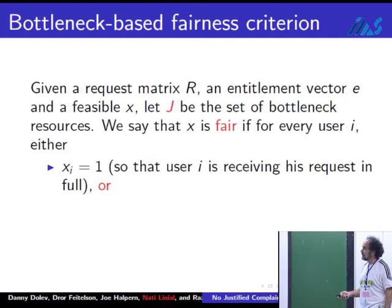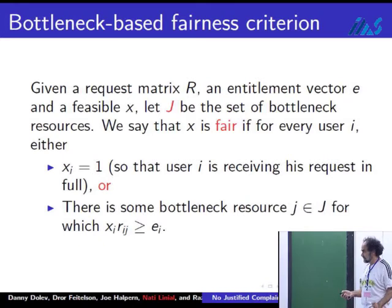What we want is to make sure that we somehow satisfy each user, that no user has any grounds for complaining about fairness. One possibility, we're looking at user i. Perhaps x_i is 1. In other words, you got what you asked, and there's no reason to complain. The other possibility is the most subtle part.